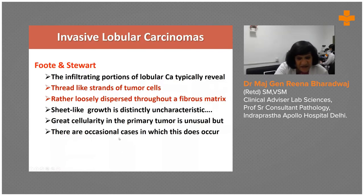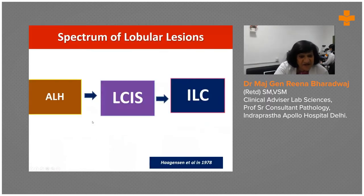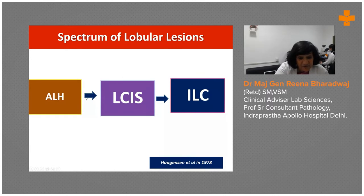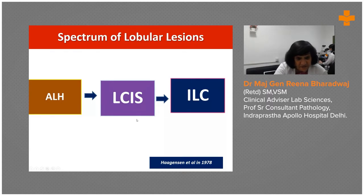We need to keep a few more things in mind. That was the introduction, and we now move on to the entire spectrum of lobular lesions: atypical lobular hyperplasia, followed by lobular carcinoma in situ, and finally invasive lobular carcinoma.